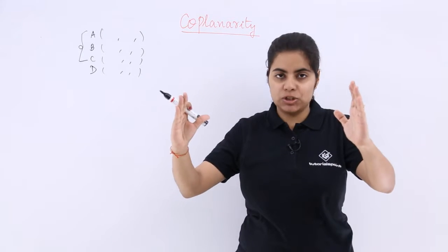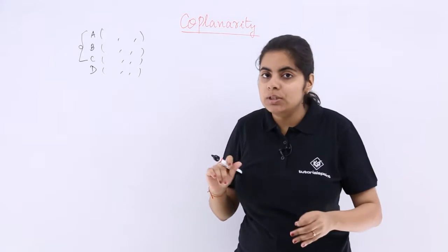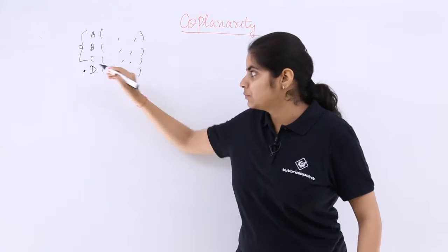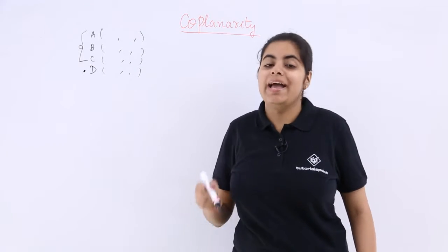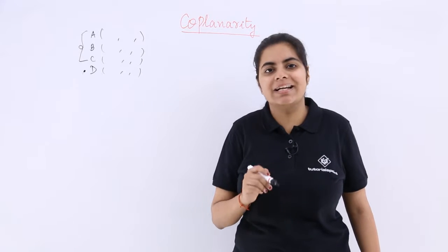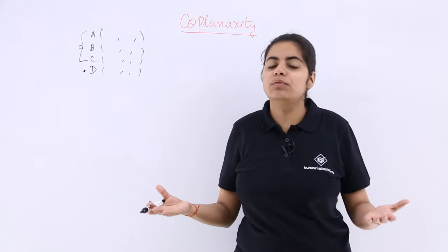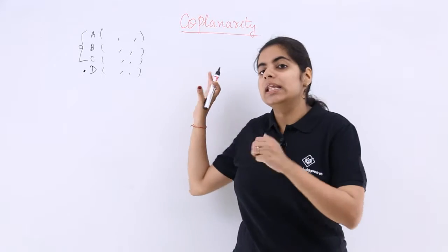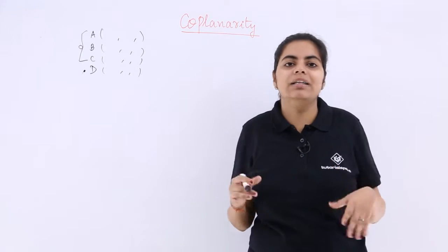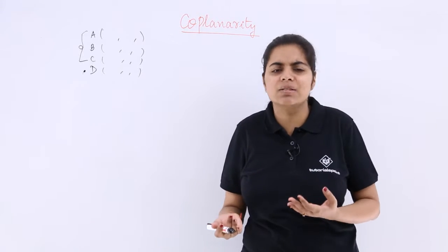Now when you get the required equation of a plane, put the fourth point in that equation and check whether this fourth point satisfies the equation. If the fourth point satisfies the equation, the given points are coplanar; otherwise, they are not coplanar. So that is as simple as that.